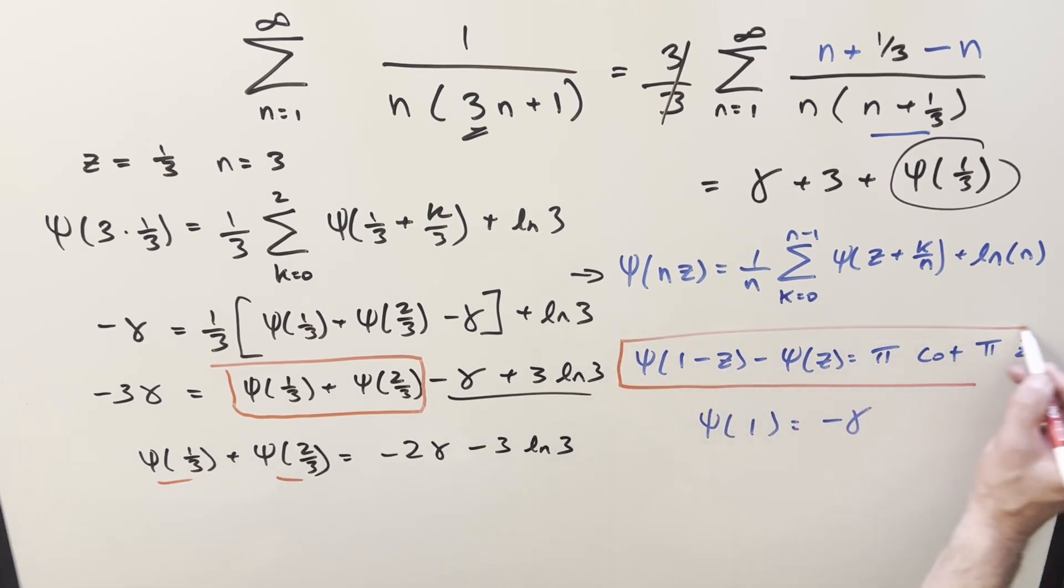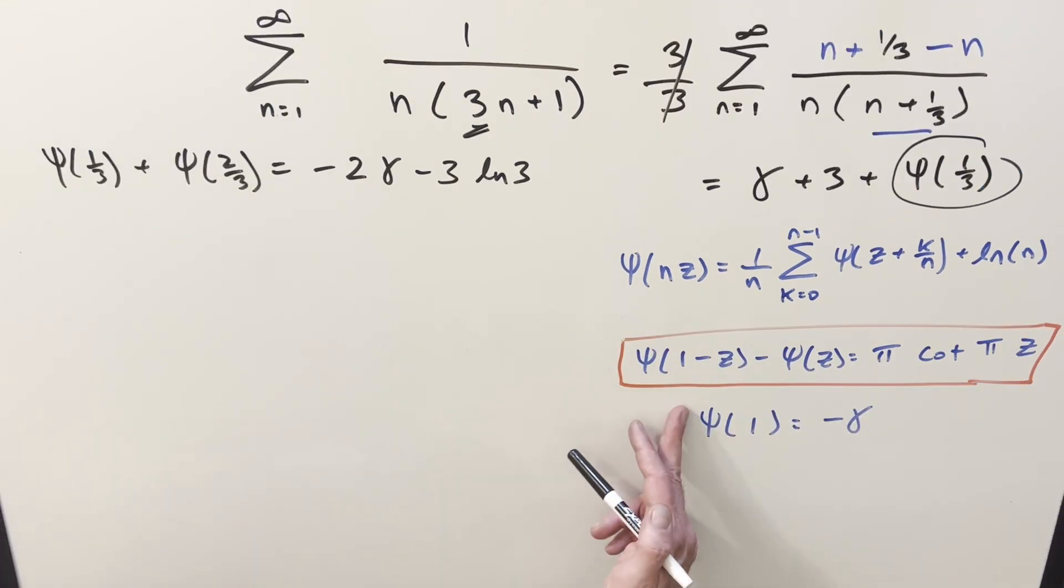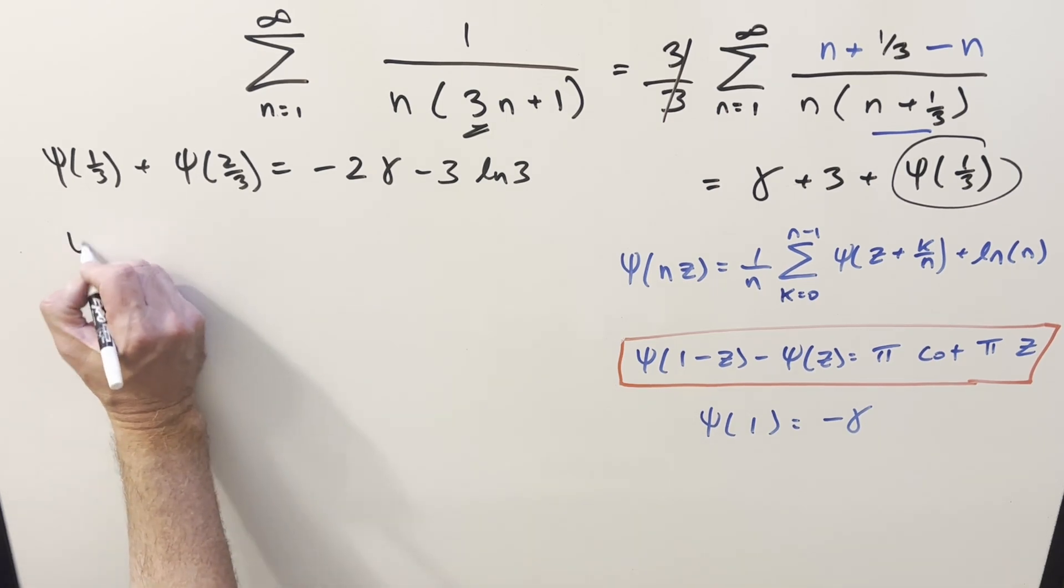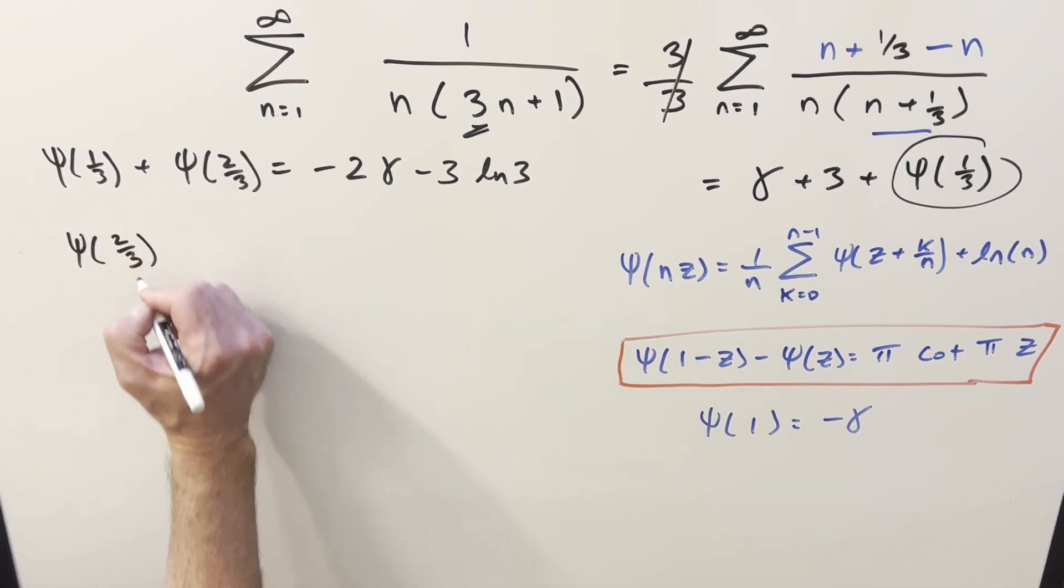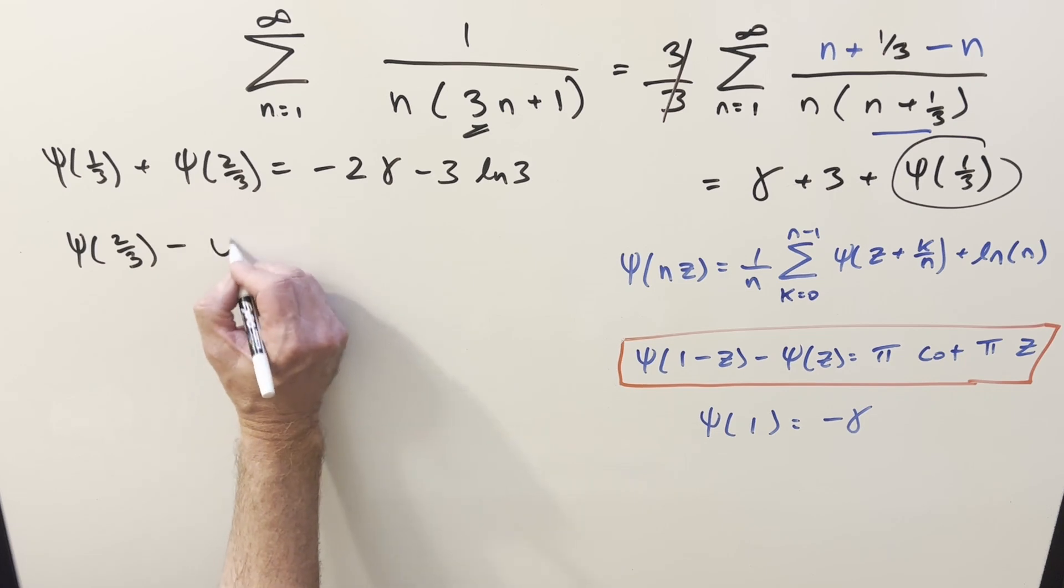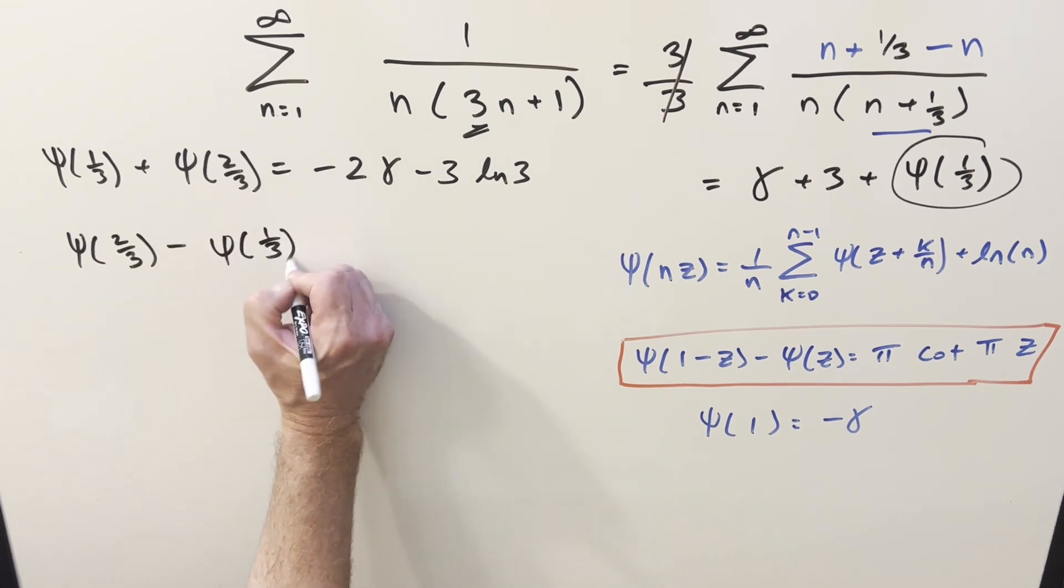That's where we'll use the reflection formula. Now for our reflection formula, we'll use the same value, z equals 1 third. You could do it the other way and use 2 thirds. It's not really going to matter, but let's stick with 1 third. So plugging in here, you're going to get digamma of 2 thirds, subtracting 1. And then for the second one, it's just going to be digamma 1 third.